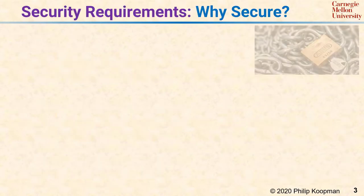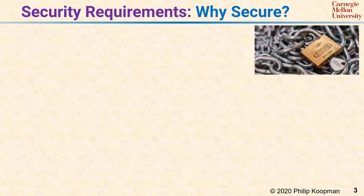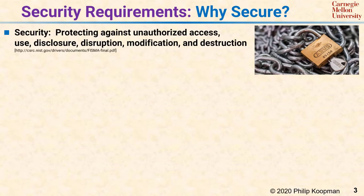Let's discuss the elements of a good security plan, starting with security requirements. Security requirements answer the question of why you want your system to be secure, and what it means to be secure. A generic description of security is protecting against unauthorized access, use, disclosure, disruption, modification, or destruction. However, you probably care much more about some aspects of security than others.